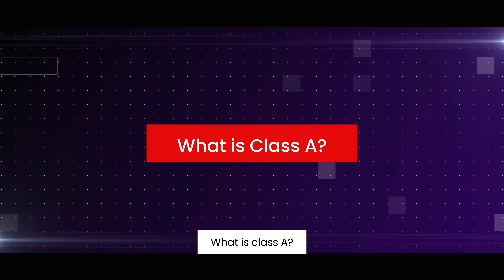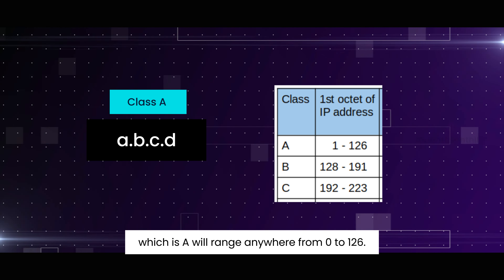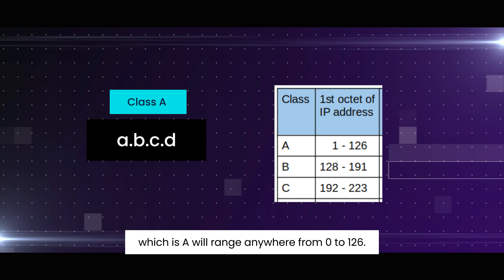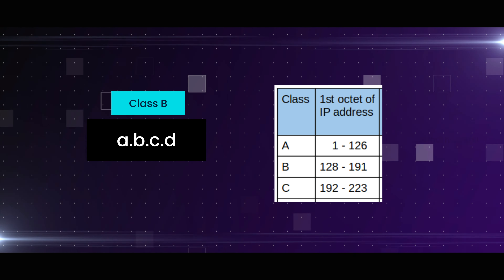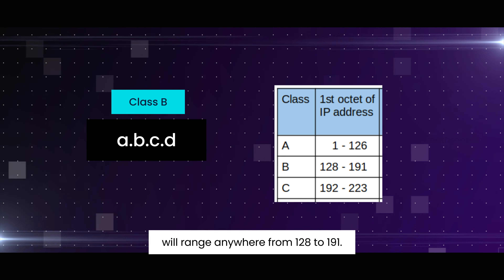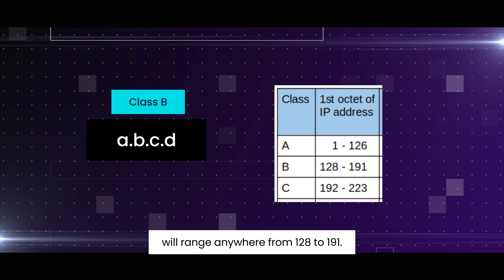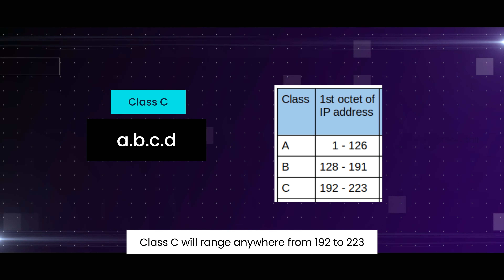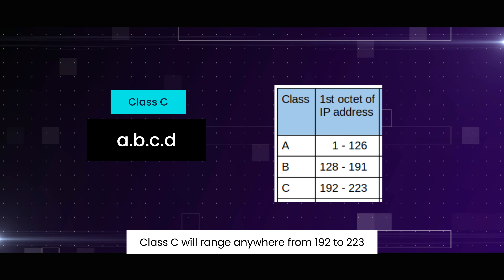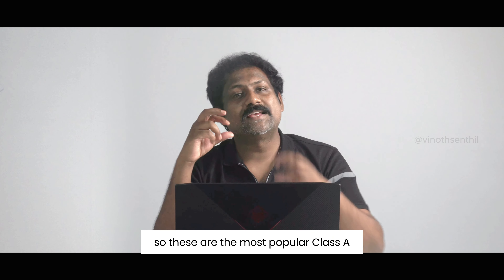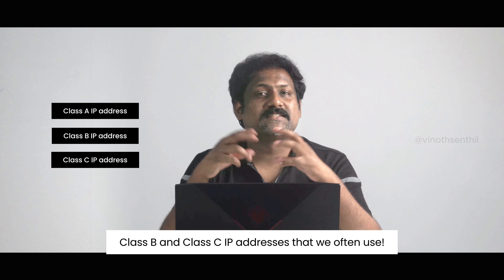Class A means the first octet, which is 'a', will range anywhere from 0 to 126. Class B will range anywhere from 128 to 191. Class C will range anywhere from 192 to 223. These are the most popular Class A, Class B, and Class C IP addresses that we often use.